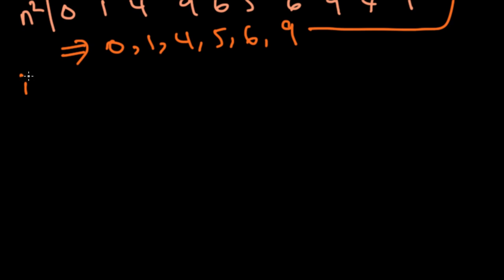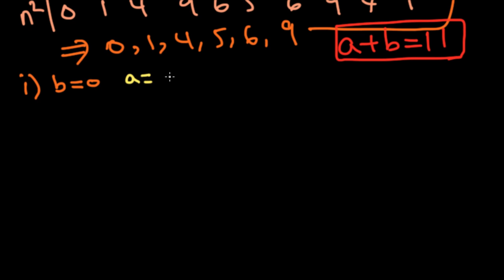So first case, let's say that B equals 0, then just a side note, remember A plus B equals 11. If B equals 0, then A equals 11 minus 0, which is 11. And this obviously cannot work because AABB must all be single digit numbers.